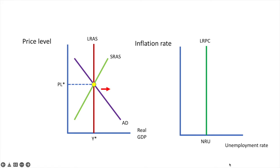If there is a sudden increase in aggregate demand, the aggregate demand curve will shift rightwards from AD to AD1. This now corresponds to an increase in output from Y-star to Y1 and an increase in the price level from PL-star to P1.